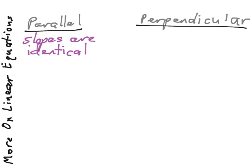So whatever the slope is on one equation, the slope will be the same on the other. Now with perpendicular lines, it's important to remember slopes are inverse reciprocals.